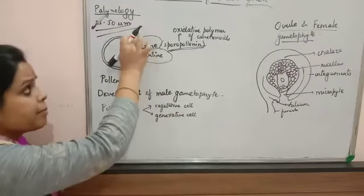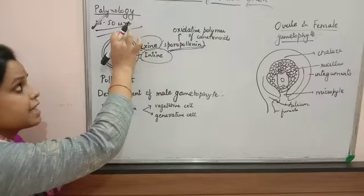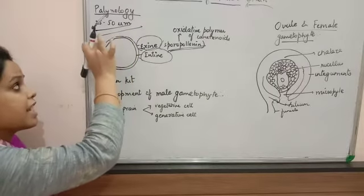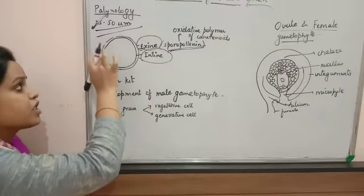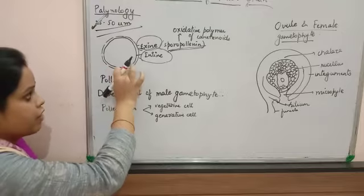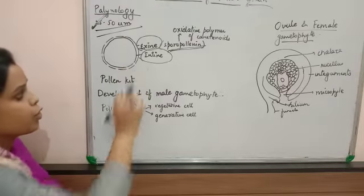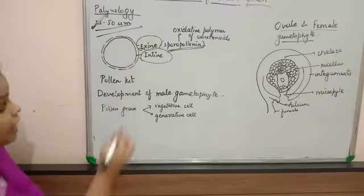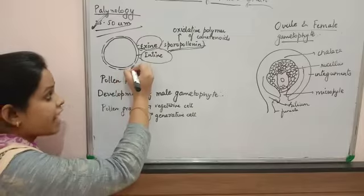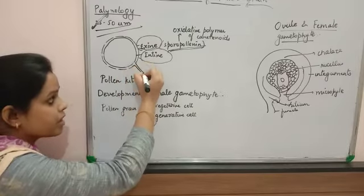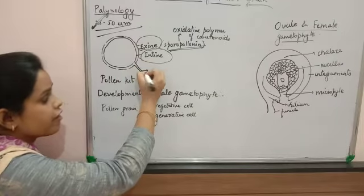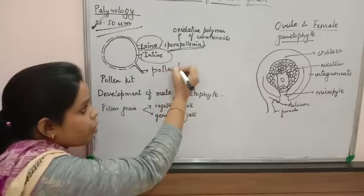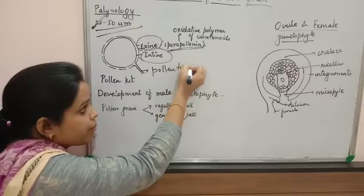There are some places in the exine which are not covered by sporopollenin. That region is used for germination and the development of the pollen tube — that is where pollen tube development starts.